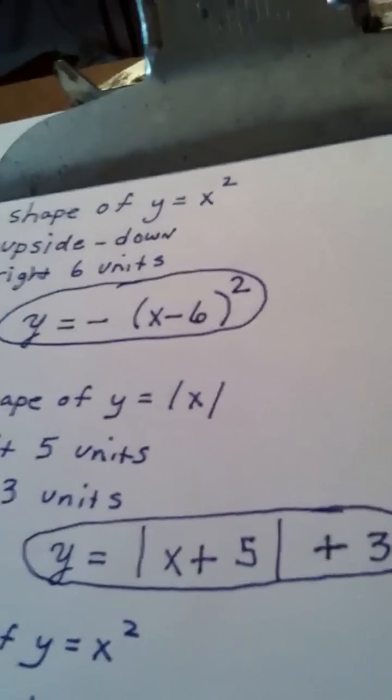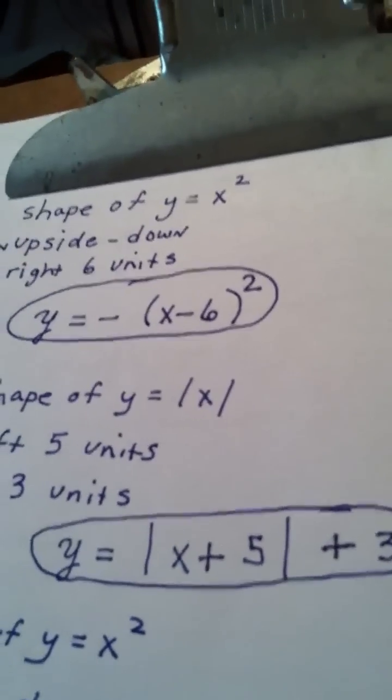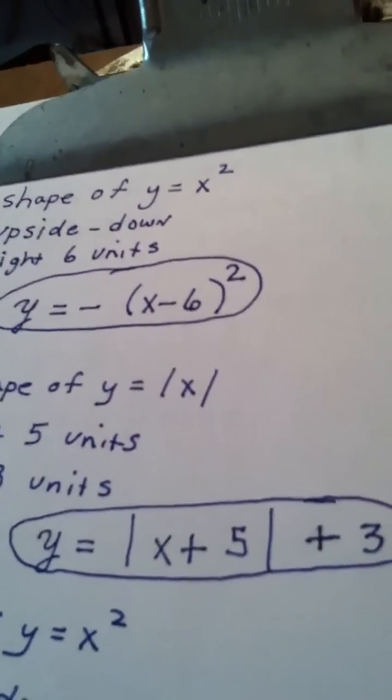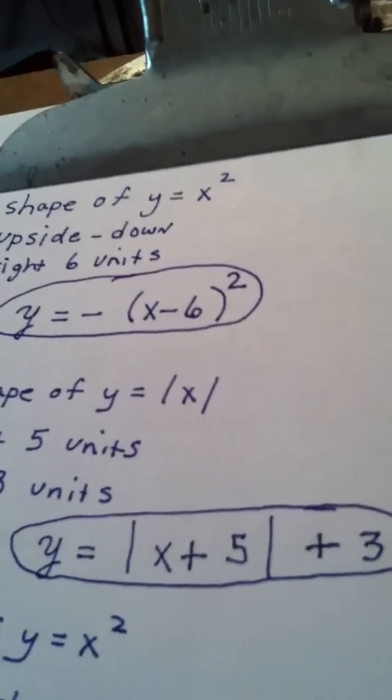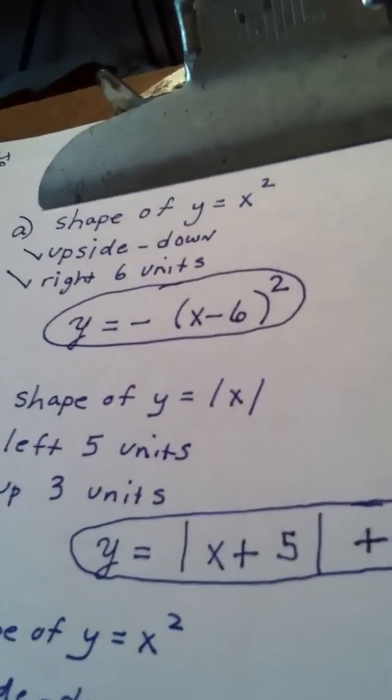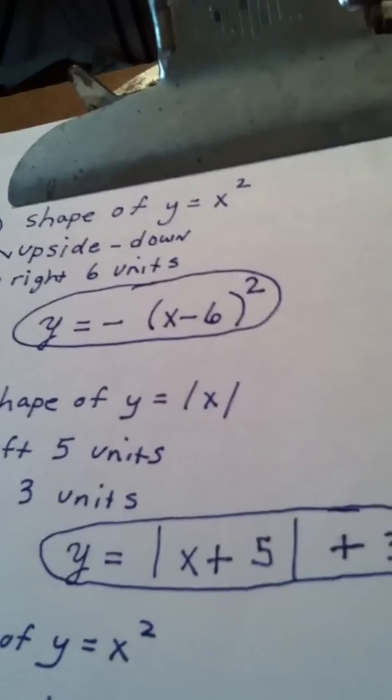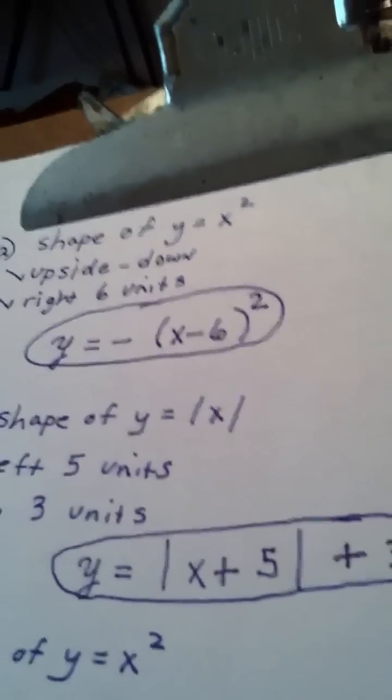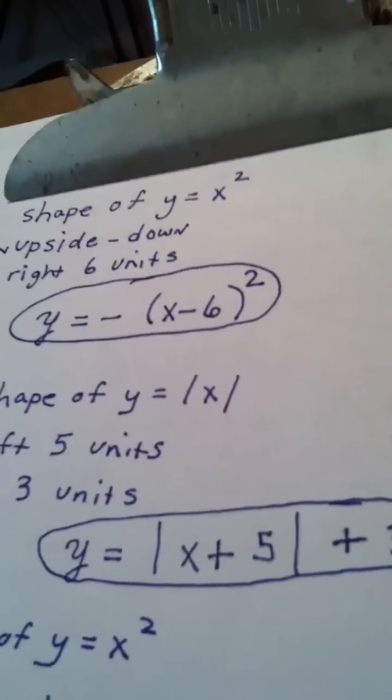When you're doing these kind of problems, what you need to remember is x is backwards and y isn't. So when I look at this answer, the plus three means up three. x plus five means five to the left. And of course, the reason I put the absolute value bars is because that's the shape I was told to use here.